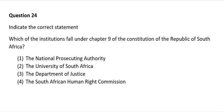Question 24: Indicate the correct statement. Which of the following institutions fall under Chapter 9 of the Constitution of the Republic of South Africa? 1) The National Prosecuting Authority; 2) The University of South Africa; 3) The Department of Justice; 4) The South African Human Rights Commission. The correct answer is number 4: the South African Human Rights Commission.